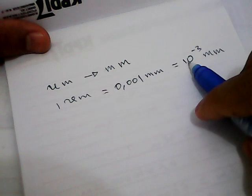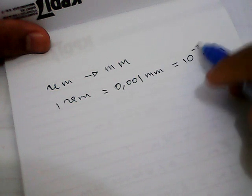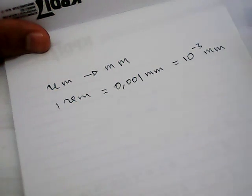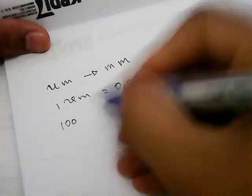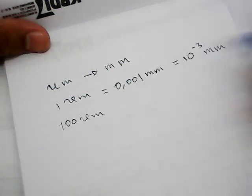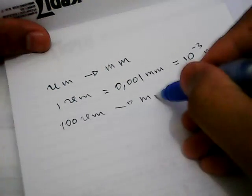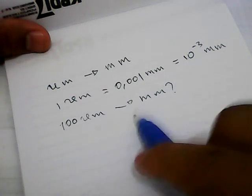It means 10 power minus 3 is just the same as this decimal number. For example, I want to convert 100 micrometers into millimeters. How much is 100 micrometers converted into millimeters?